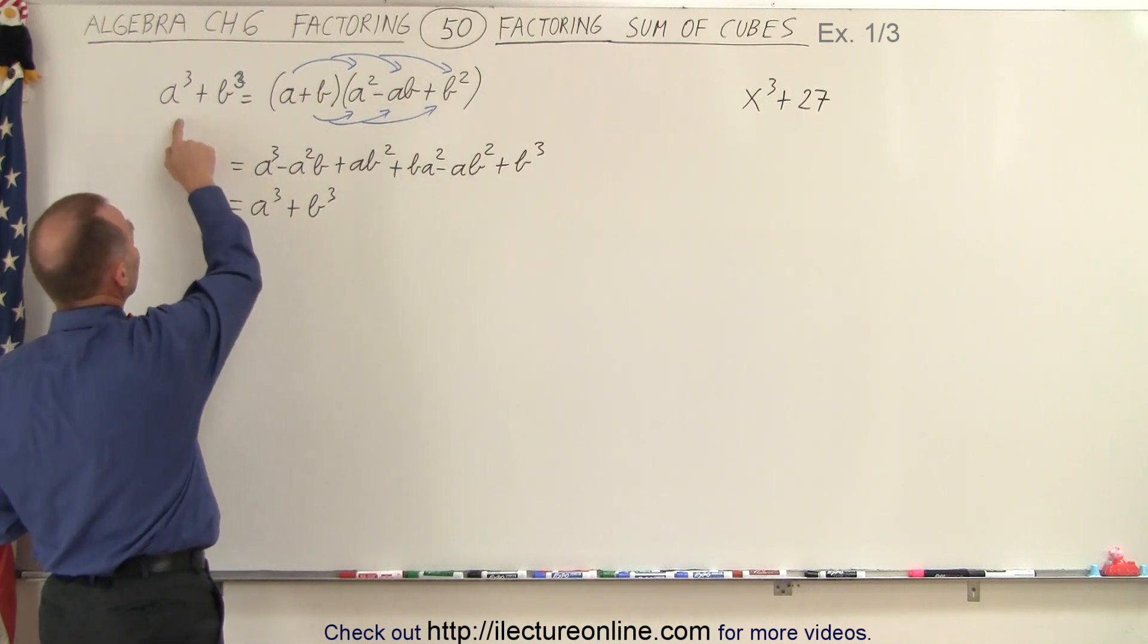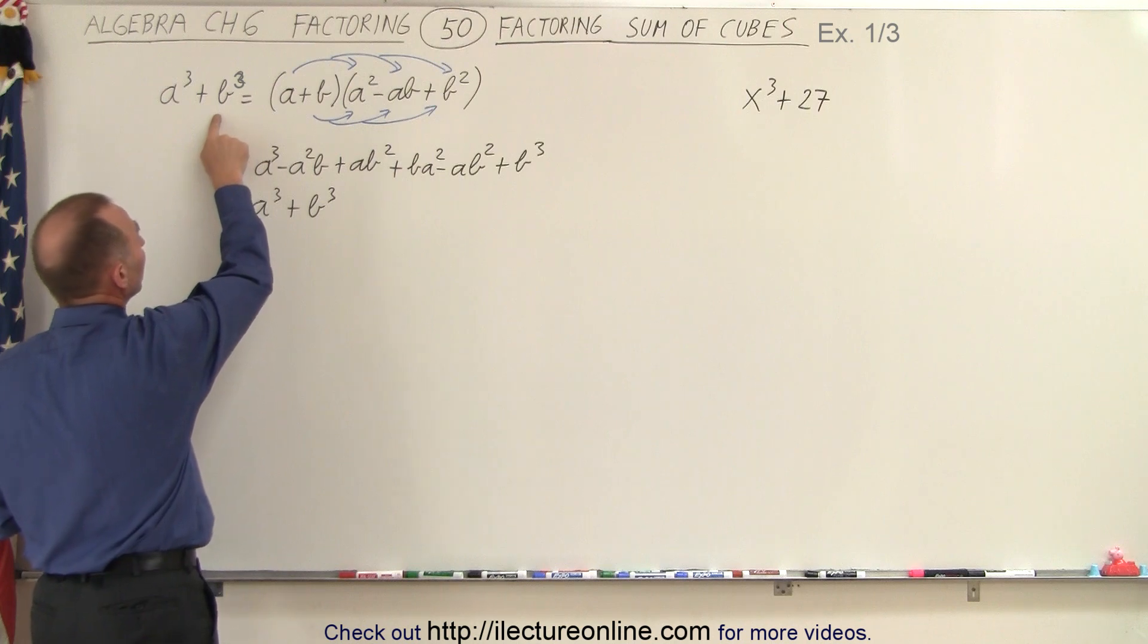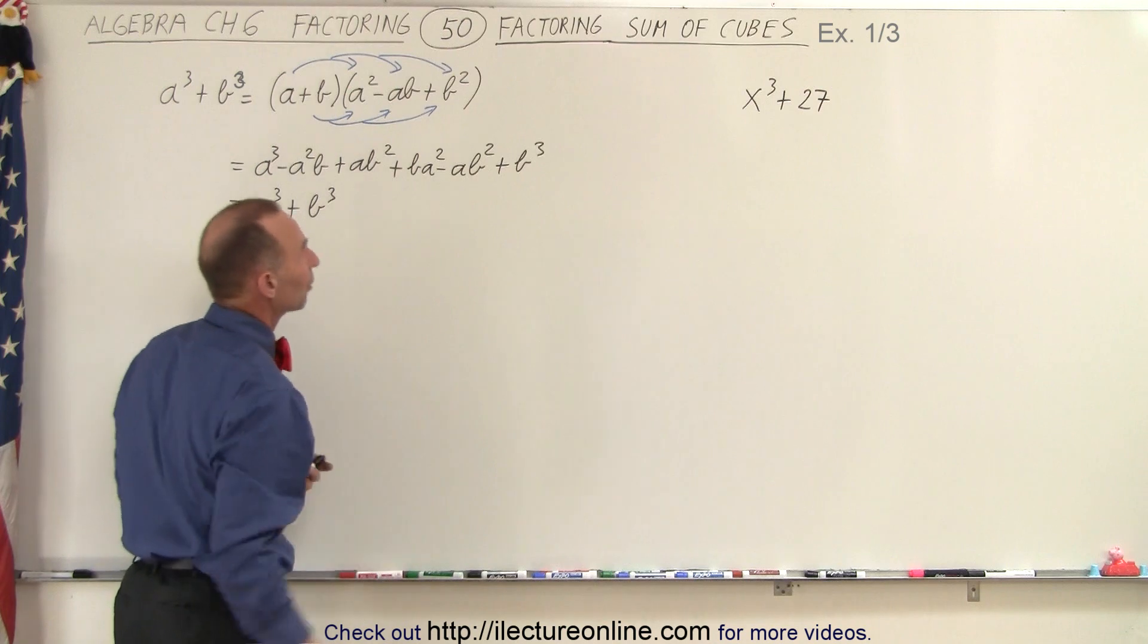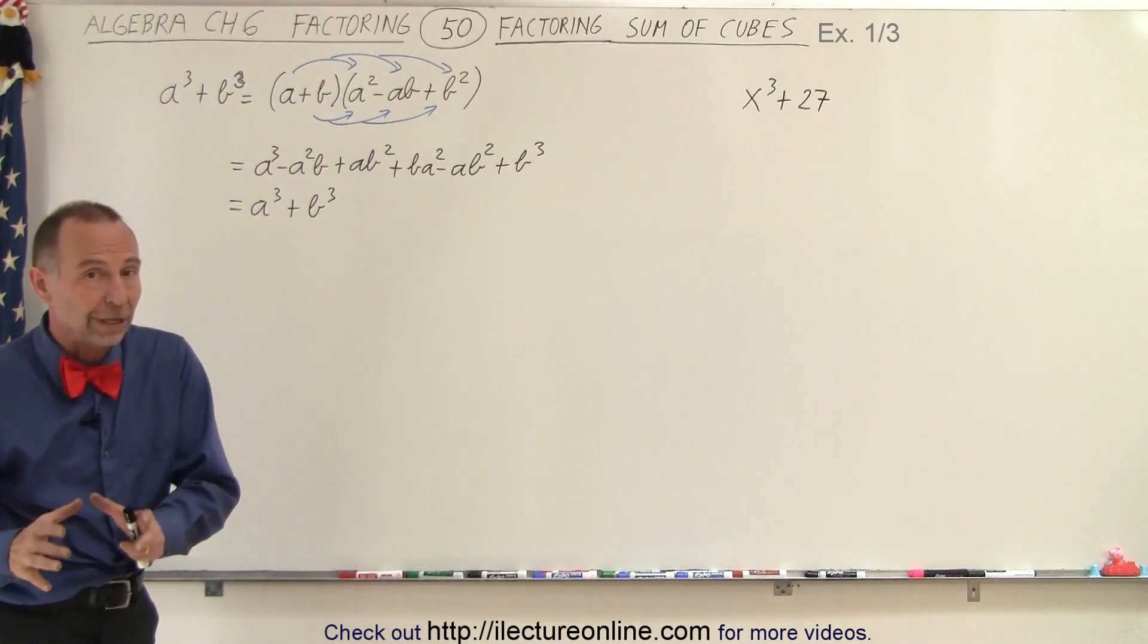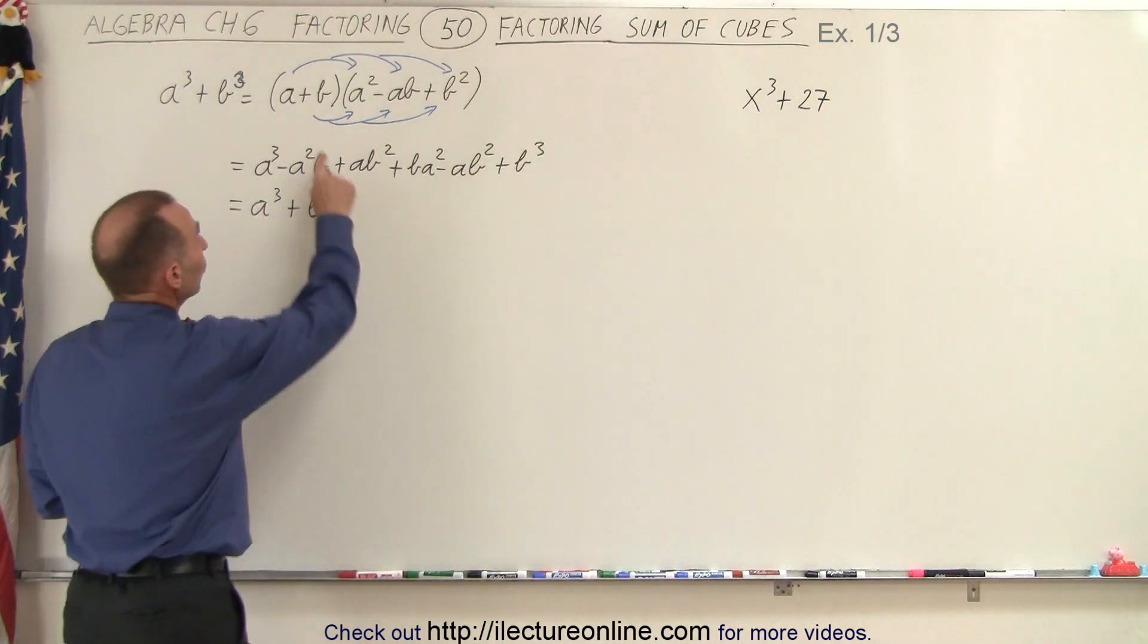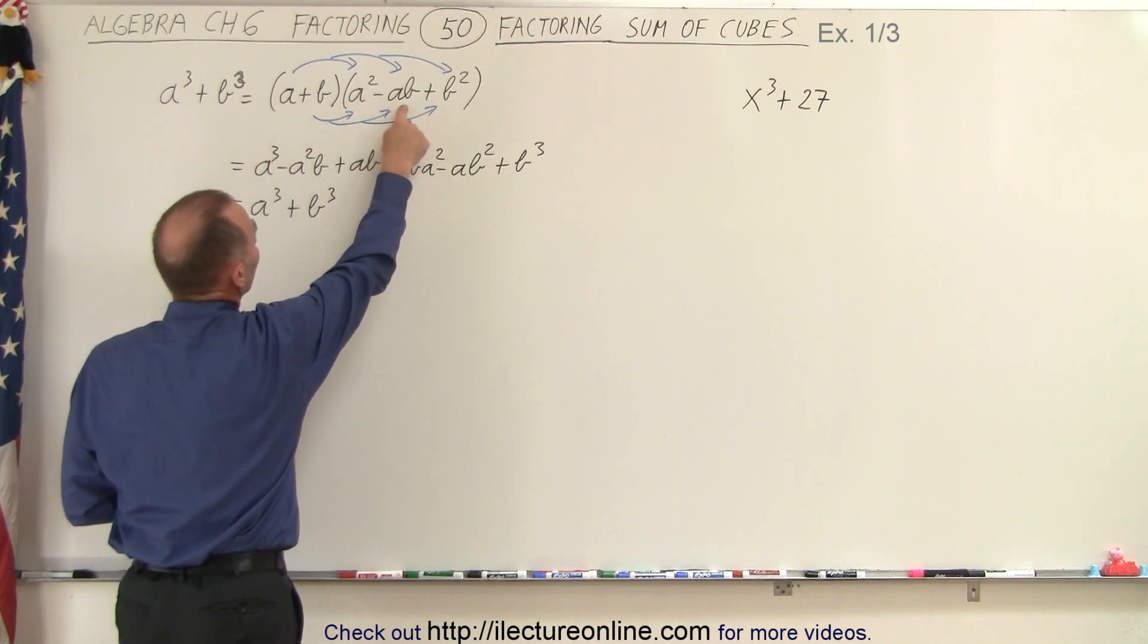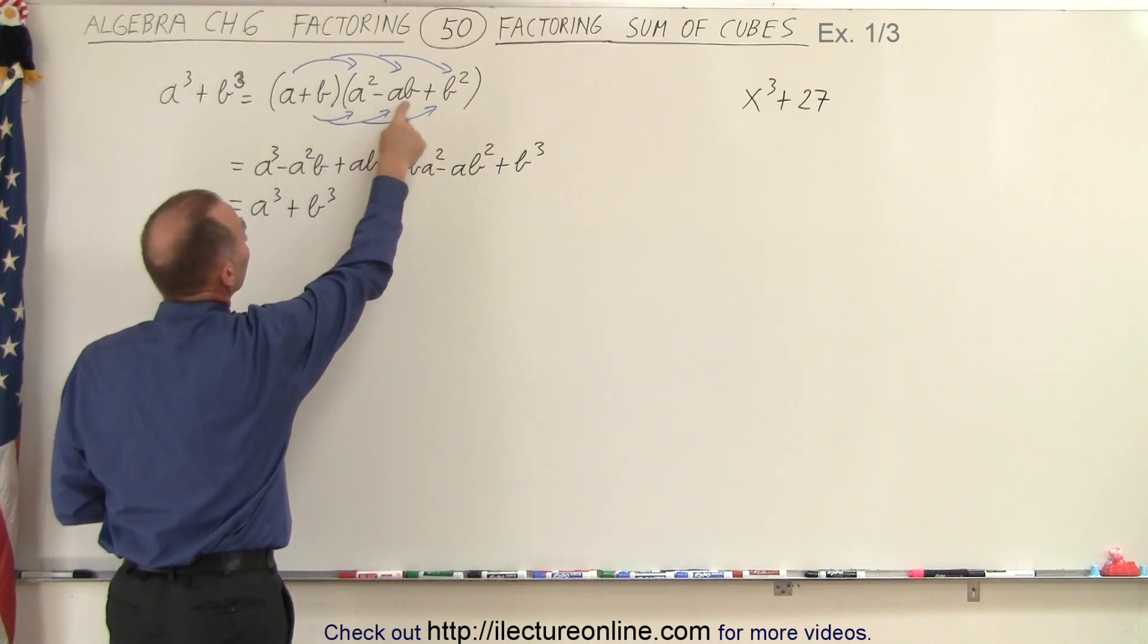It turns out the quantity a cubed plus b cubed can be written in the factored form of a plus b times a squared minus ab plus b squared. Just to make sure that we know that that is correct, we're going to multiply these together again. So we're going to multiply a times each of the three terms here and b times each of the three terms.